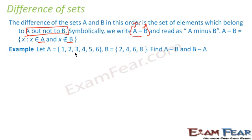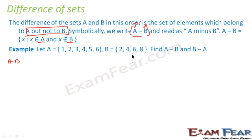For example, in this case A has elements 1, 2, 3, 4, 5, 6 and B has elements 2, 4, 6, 8. Now we want to find A minus B, and also B minus A. To find A minus B using the normal approach, we subtract all the elements of B from A.